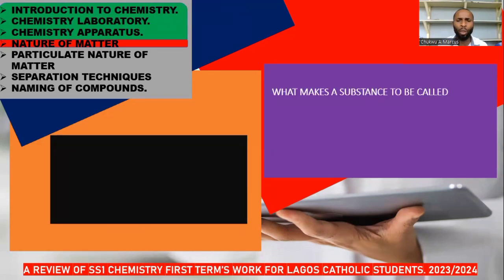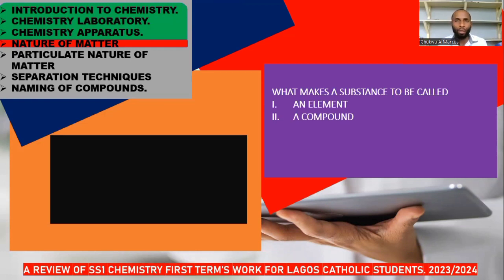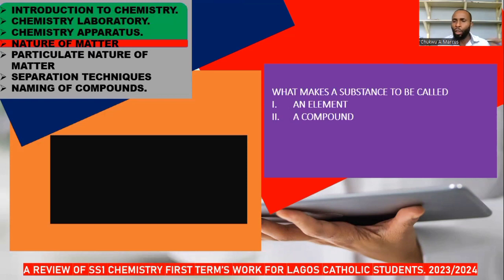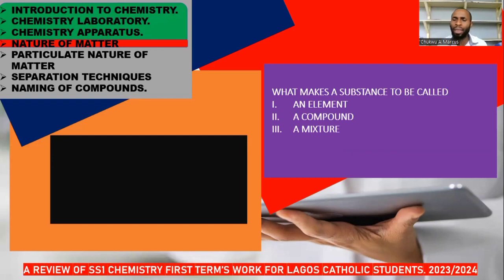What can make a substance be called an element? An element is a substance that has all its atoms having the same atomic number, and it cannot be separated into different substances. A compound is a substance that has more than one kind of atom. We can separate it by chemical means, but not by physical means, because the atoms are joined together by a chemical bond. A mixture is made up of more than one kind of atom, but they are physically combined, so we can separate them using physical means.